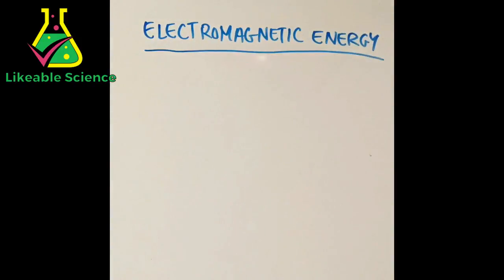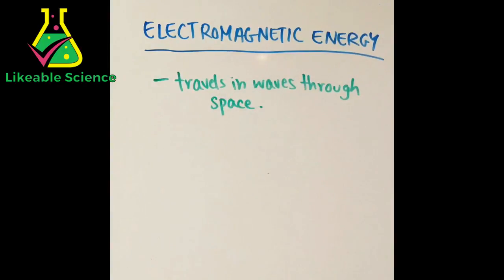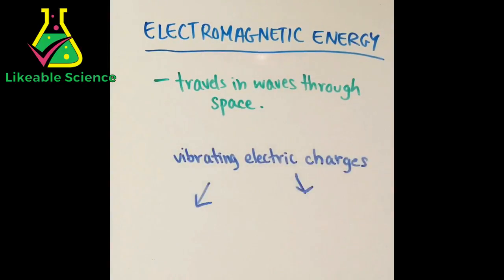Electromagnetic energy is another form of energy which travels in waves through space like the atmosphere, empty space, and more. Vibrating electric charges cause these waves and this is actually how we're able to see things in space like the stars and the sun.